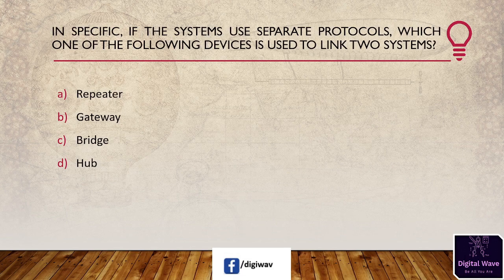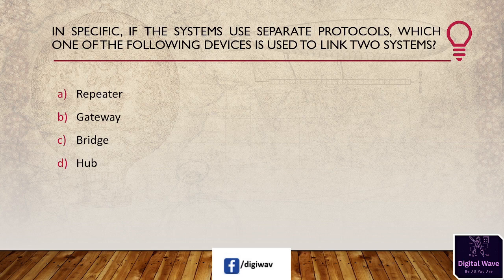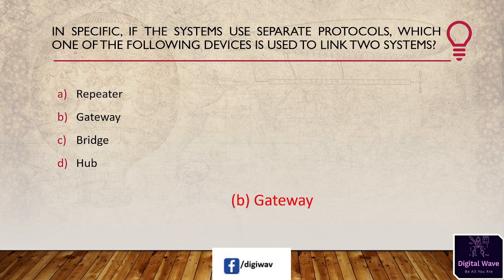Next question: if two systems use separate protocols, which device is used to link them? Options are: repeaters, gateway, bridge, and hub. The answer is gateway — if the systems use separate protocols, a gateway device is used to link the two systems.